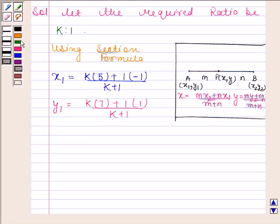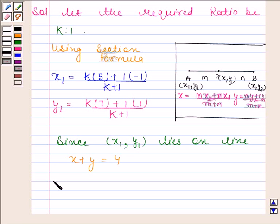Now since the point (x1, y1) lies on line x plus y equals 4, therefore it must satisfy this equation. Thus, now we have 5k minus 1 upon k plus 1 plus 7k plus 1 upon k plus 1 is equal to 4.